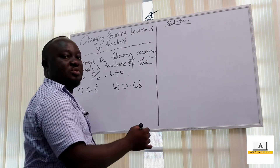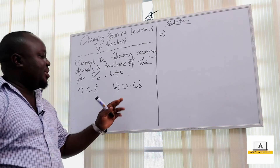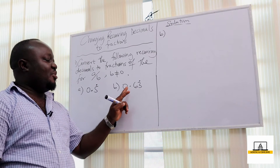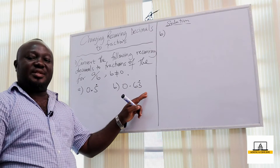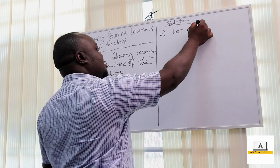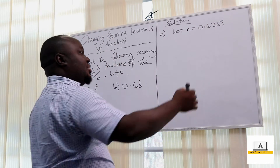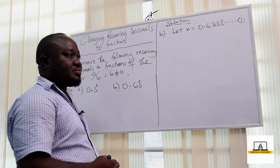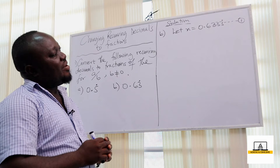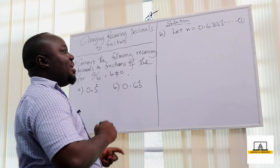Now we move to part b. Here we have 0.63 with a dot over the 3, meaning the 3 is recurring. This is 0.63333... Let x be equal to 0.63333... recurring. We call this equation 1.